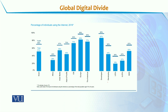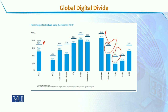We are also particularly interested in youth internet access. At the world level, 69% of youth have access to the internet. In the developed world, this figure is 98%, compared to the least developed countries where it is only 38%, and in the developing world it is 66%. So, youth in the developed world have far greater internet access compared to those in the developing and least developed world.